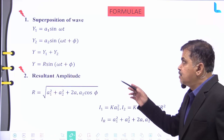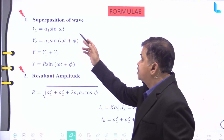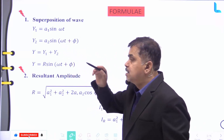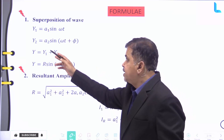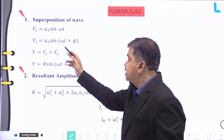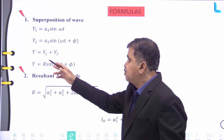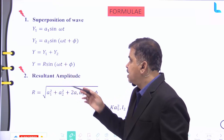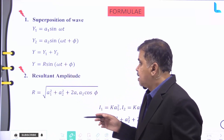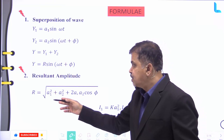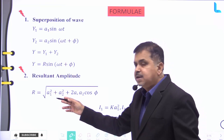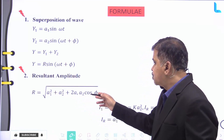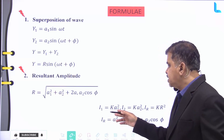Formula number one: superposition of waves. y1 = a1 sin(ωt) and y2 = a2 sin(ωt + φ). The resultant y = y1 + y2 = R sin(ωt + φ), where the resultant amplitude R is given by: R = √(a1² + a2² + 2a1a2 cos φ).